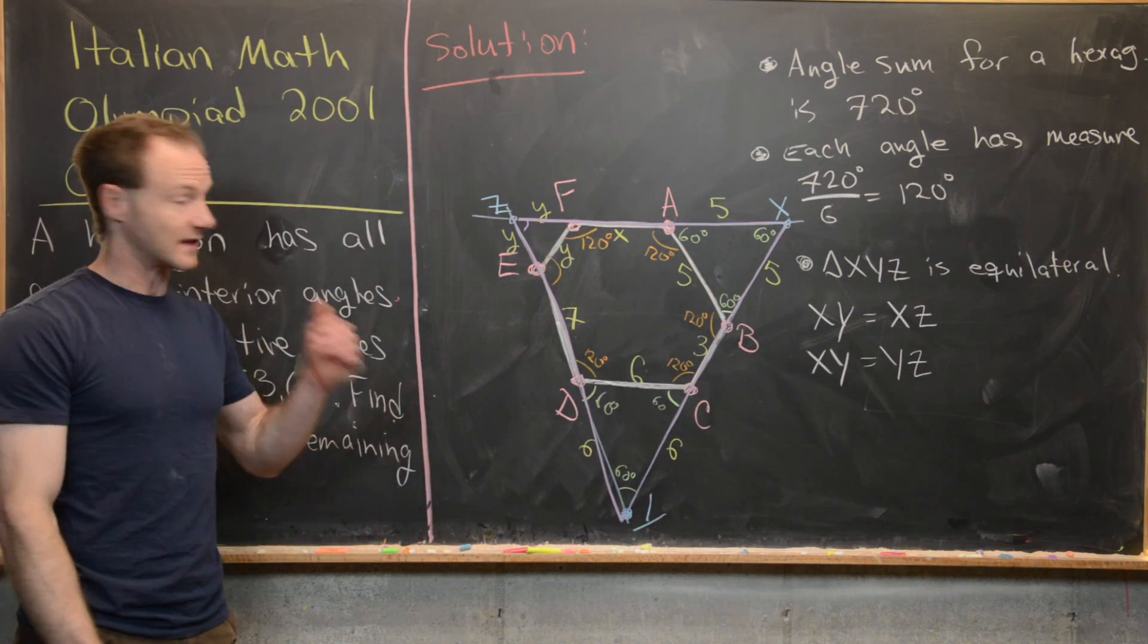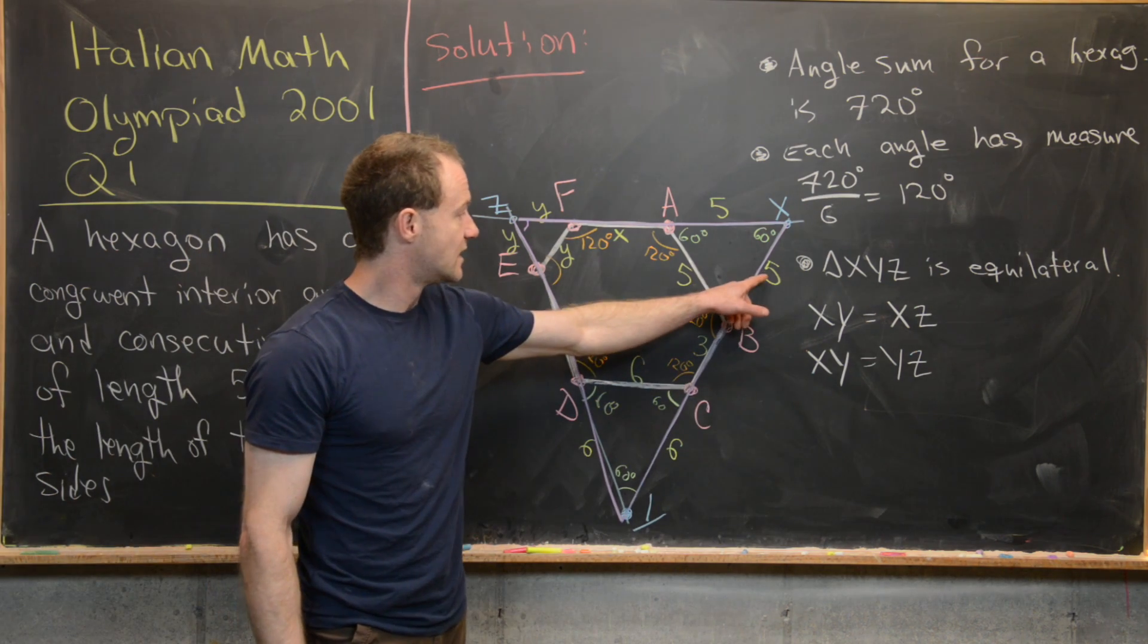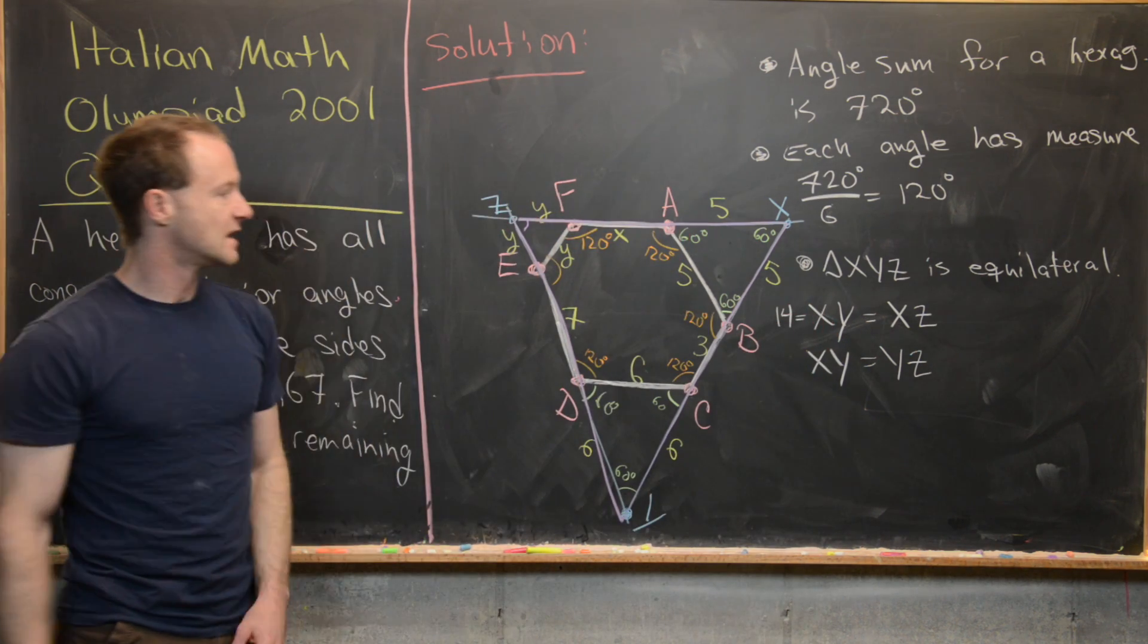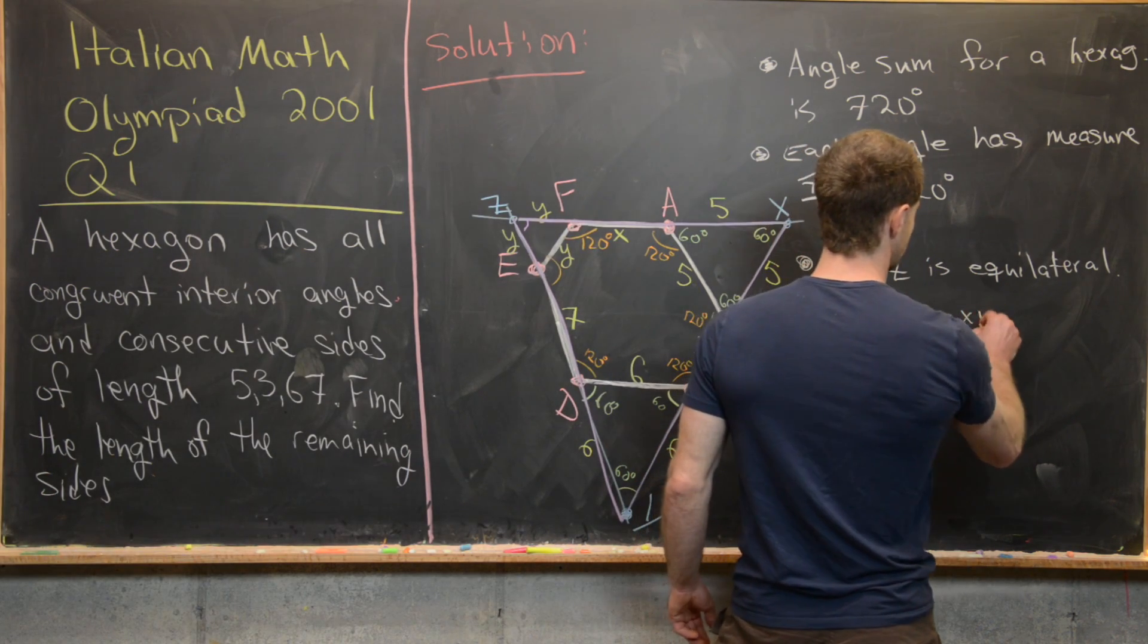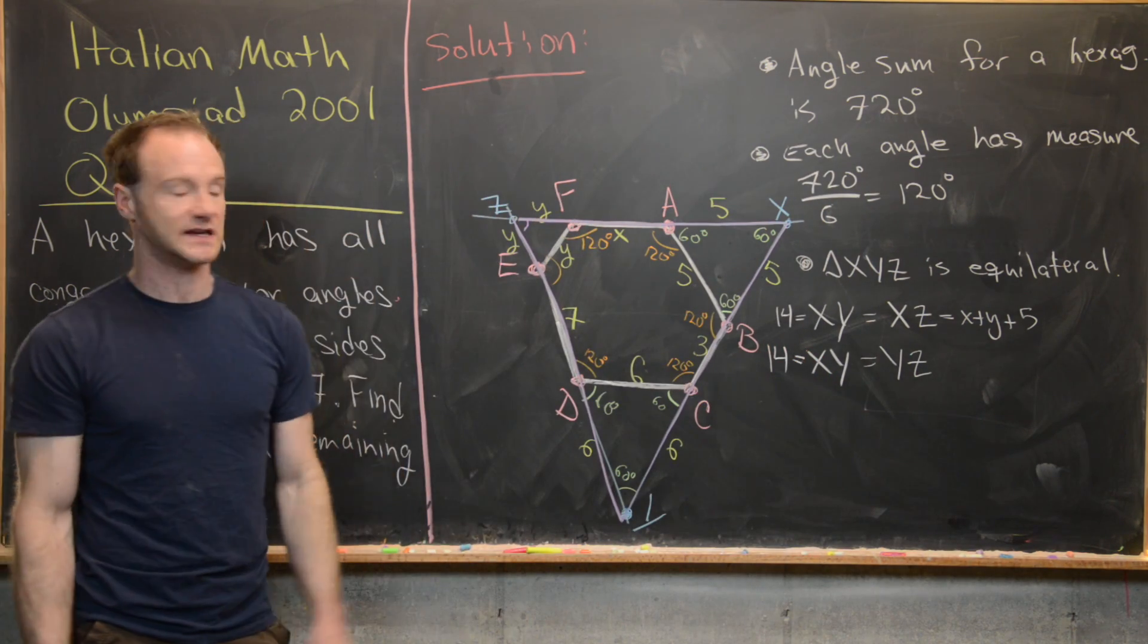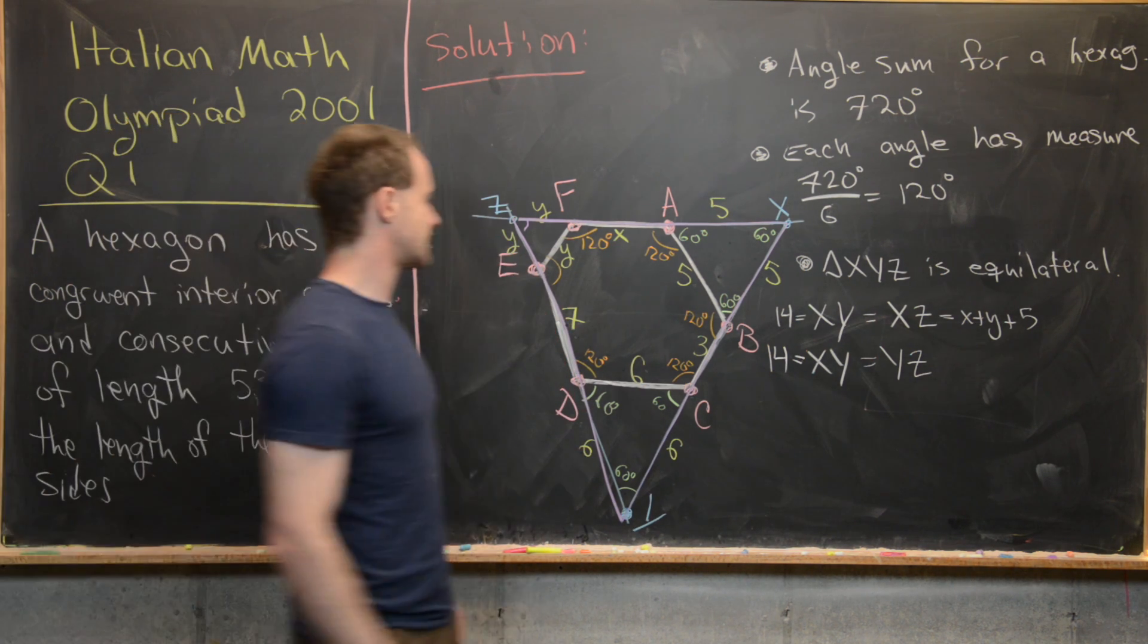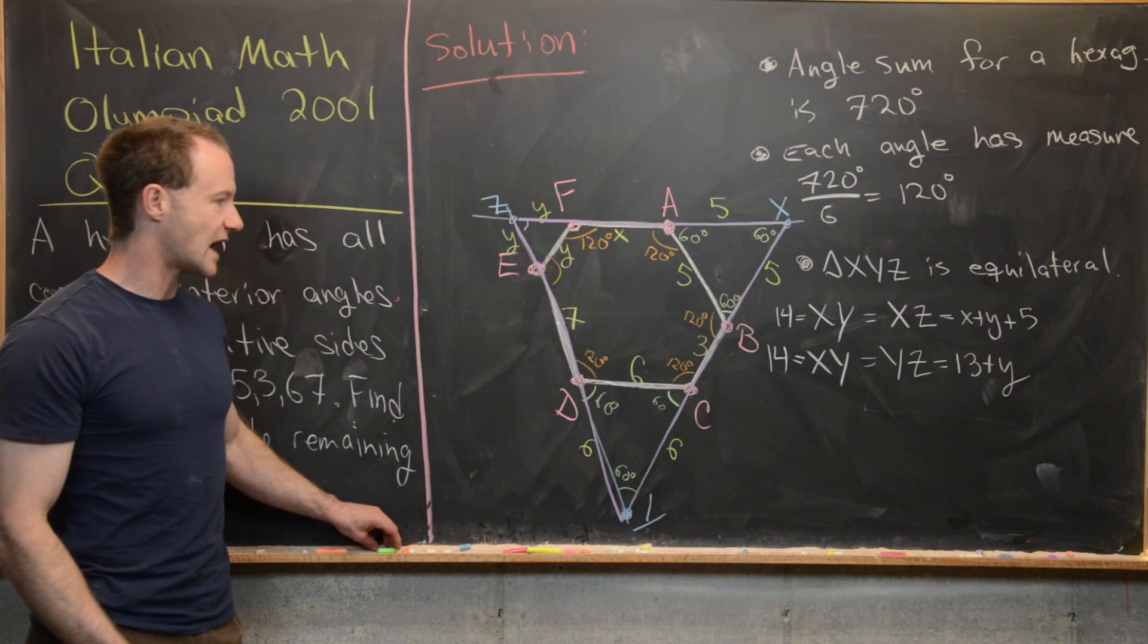But now we can calculate these side lengths just by addition. So notice XY has side length 5 plus 3 plus 6, so that's going to be equal to 14. So this is going to be 14 over here. But then XZ has side length 5, x, and y, so we can write that as x plus y plus 5. And then again, XY has side length 14, but YZ has side length 6, 7, and y, so that's going to be 13 plus y.